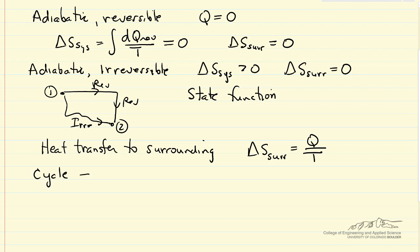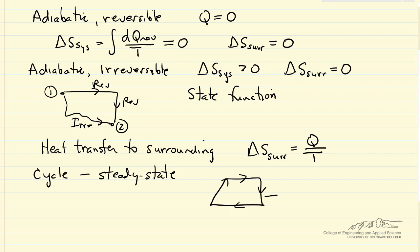Another situation to look at is if we are running a cycle — a steady-state process, running a fluid around continuously in a cycle where nothing is changing in the system. If we look at any point in the system, nothing's changing, so S is constant and delta S for the cycle is zero. The cycle can be transferring heat to and from the surroundings, and the entropy change can be positive for the surroundings, but the actual cycle has no entropy change.